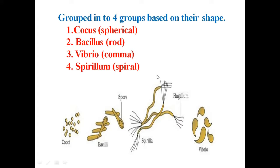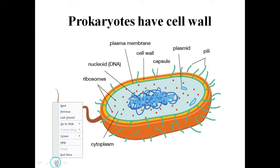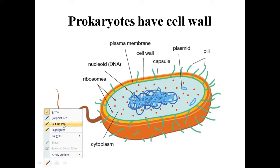All prokaryotes have a cell wall surrounding the cell membrane, except mycoplasma. The fluid matrix filling the cell is the cytoplasm. There is no well-defined nucleus. The genetic material is basically naked, not enveloped by a nuclear membrane.